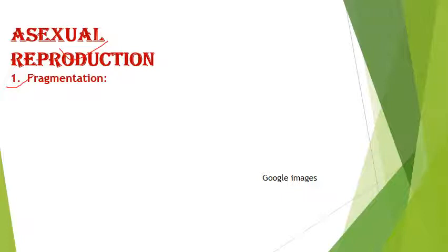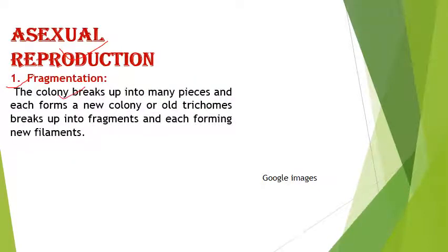Asexual reproduction occurs by various methods. The first method is fragmentation — the main filament or colony breaks down into fragments. Each fragment has the capability to produce a new colony. The old filament gets broken down into small pieces, and each piece has the capability to build a new filament.